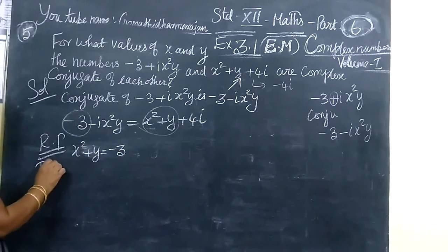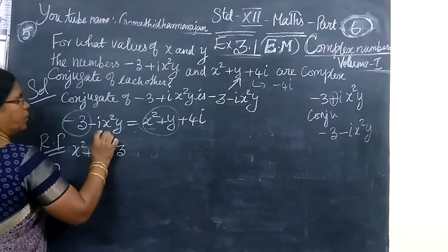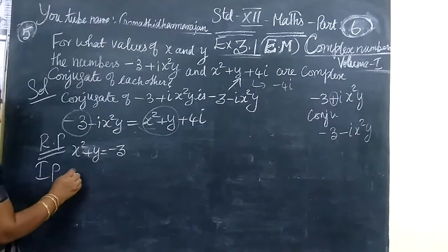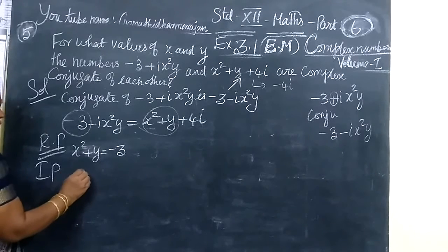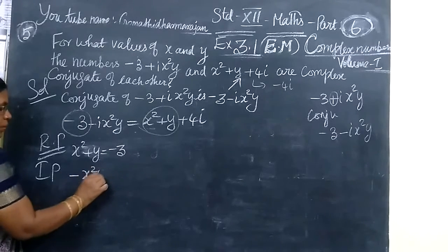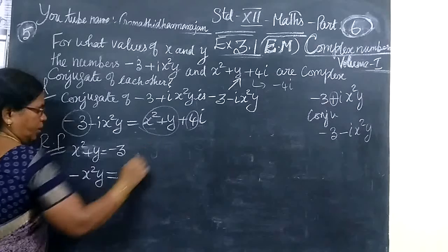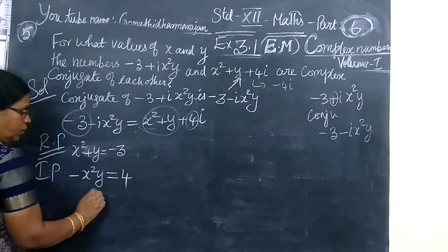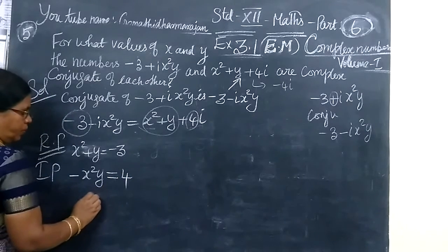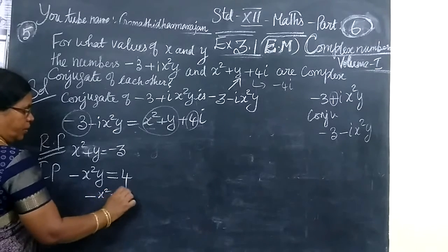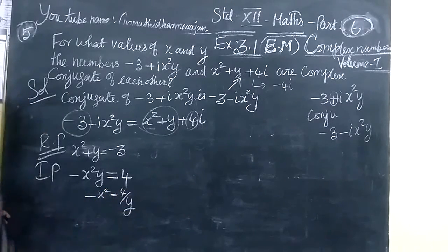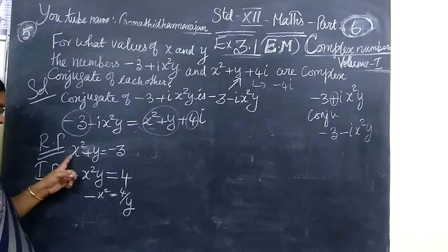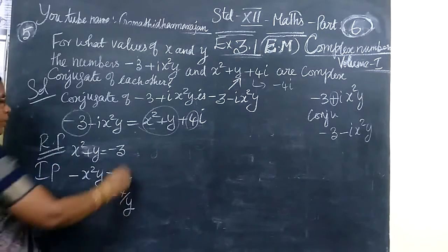Next we are equating the imaginary part. This is the imaginary part. In the second term, you are equating minus 8. So minus x times y equals this. The imaginary part gives 4. Therefore, instead of x times y, you are writing minus x times y equals 4 divided by y.